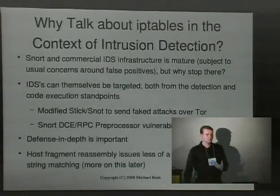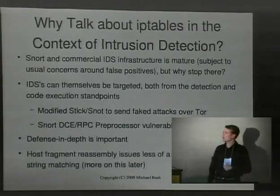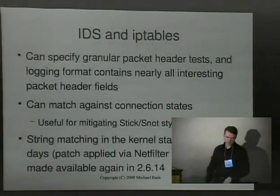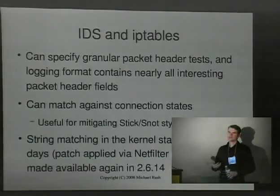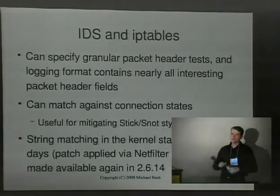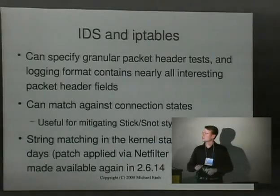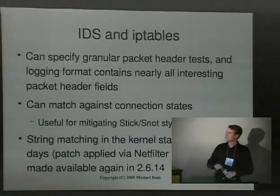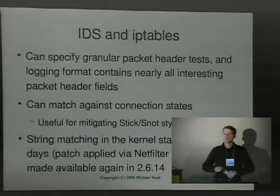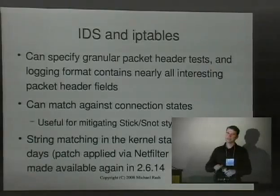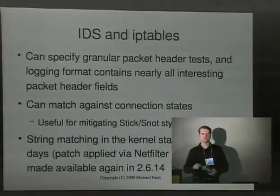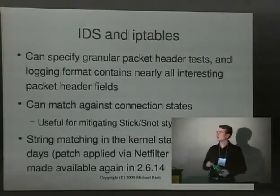An interesting consequence of using IP tables to do IDS is that host fragment reassembly issues are less of a concern. From an IDS standpoint, IP tables can do granular packet header tests, looking at transport layer characteristics and below. It does connection tracking, which is a nice consequence because you can build in infrastructure within a translated Snort rule set that makes it difficult for someone to just send a plain vanilla stick or snot style attack against your IP tables infrastructure to force it to generate false positives.